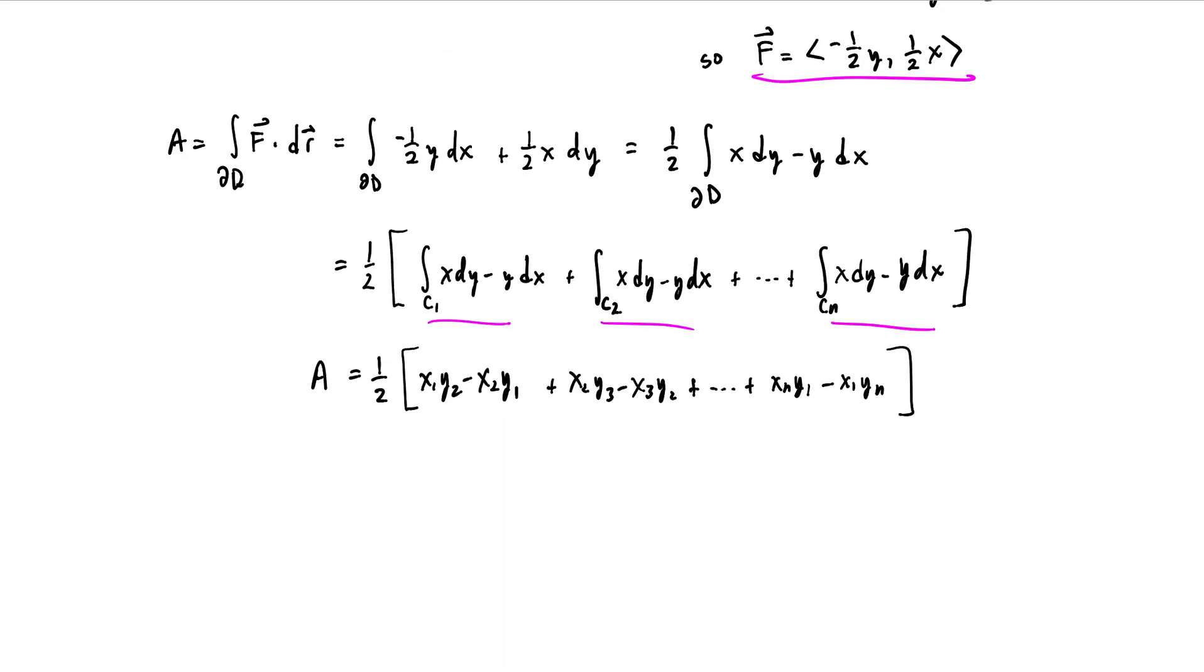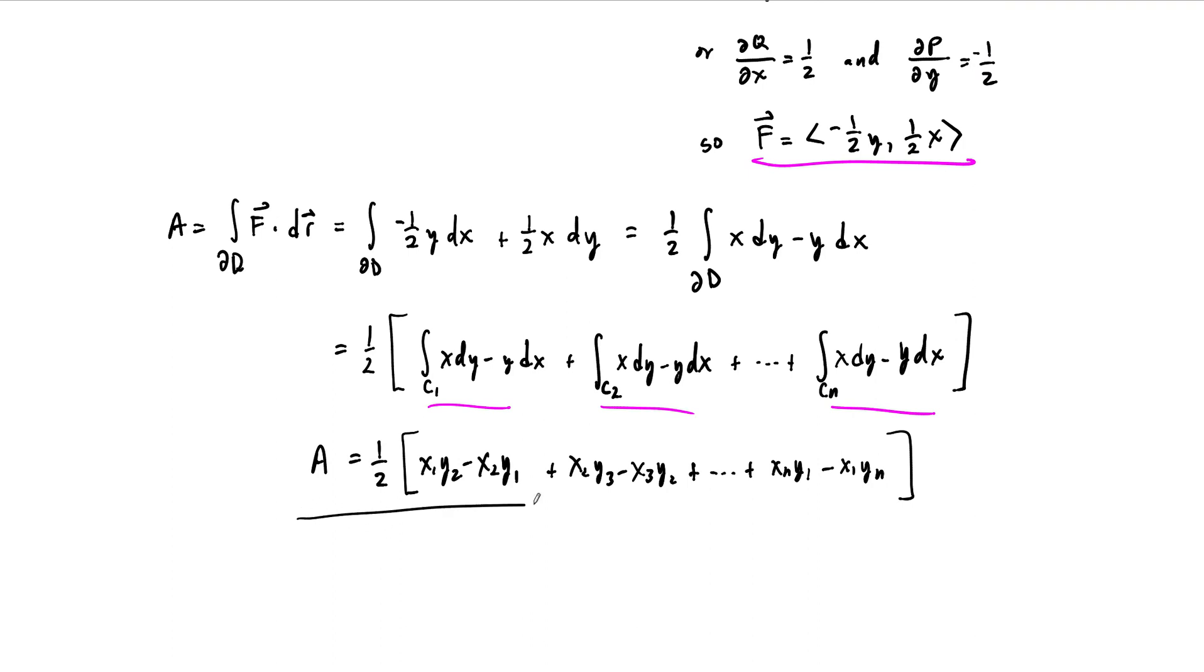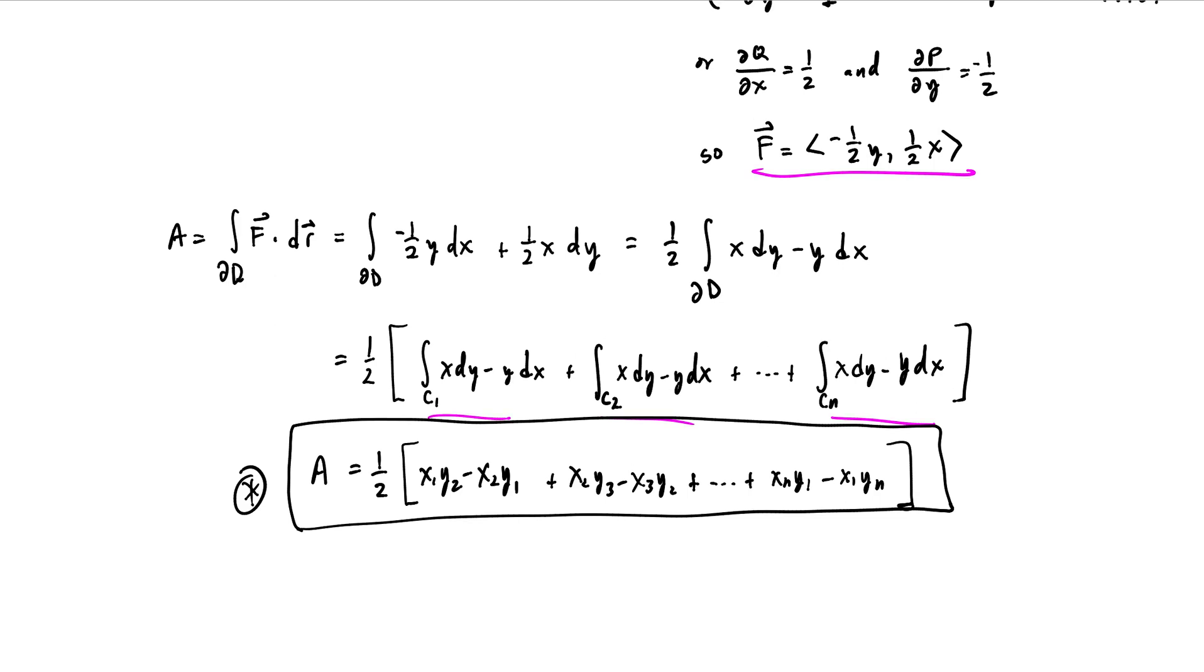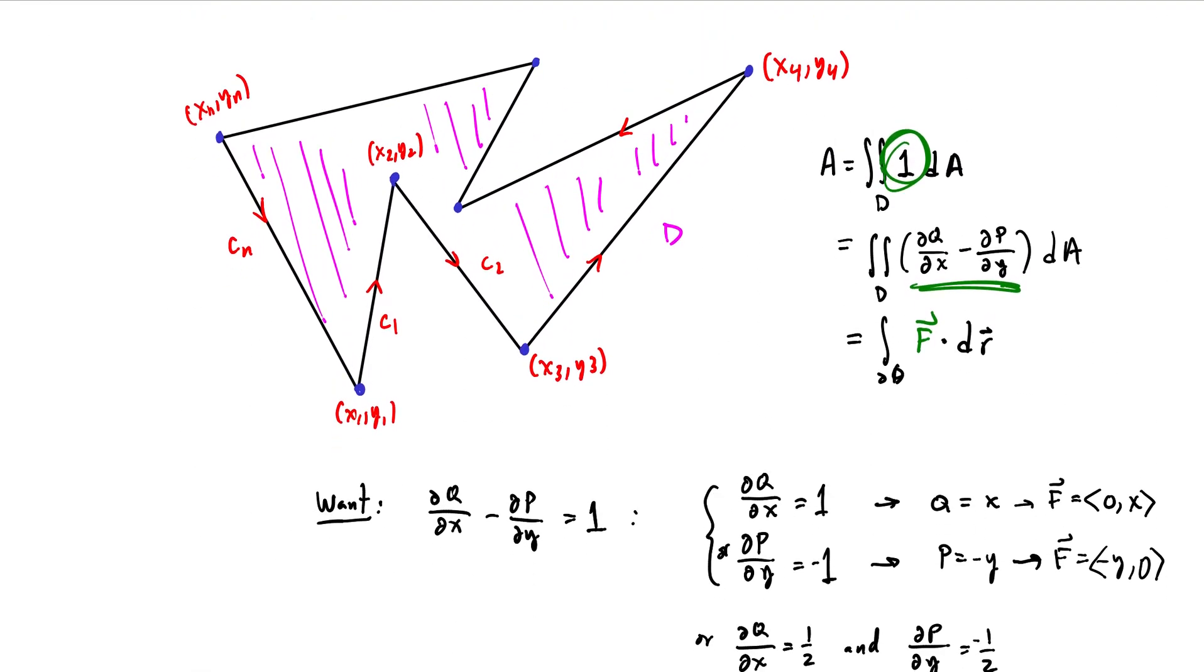The reason for the name of the shoelace formula—this formula, we just used Green's theorem to get this. You may have seen this formula in a geometry course. You didn't use Green's theorem to prove this in a geometry course. But the reason that it is taught in a geometry course is that if you list the x and the y coordinates here, starting at one of these vertices and going around in the proper orientation, you list x₁, x₂, x₃ down to xₙ, and you list the y coordinates right next door: y₁, y₂, y₃ down to yₙ.